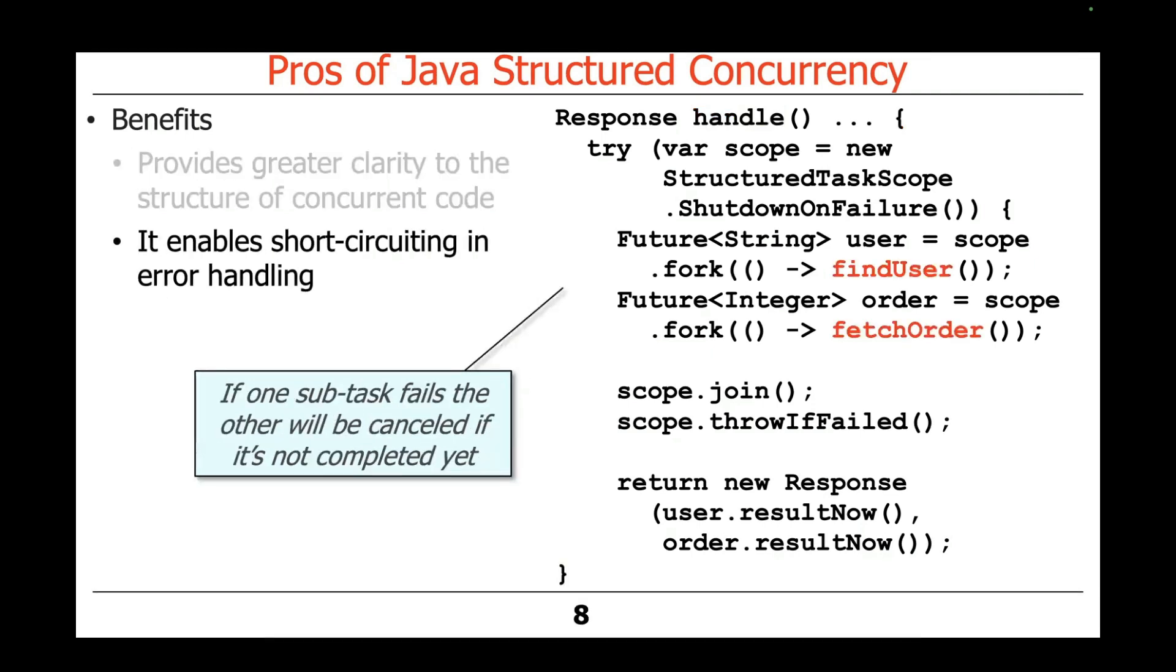In particular, if something goes wrong, if it turns out that the user wasn't authorized to make this request or this purchase, or the order that was asked for doesn't exist, or there was a problem in the network or whatever, then in that case the whole process will be canceled, and that's because we use this so-called shutdown on failure model. We'll talk more about that later.